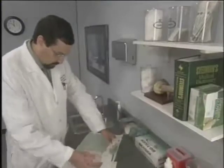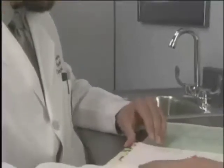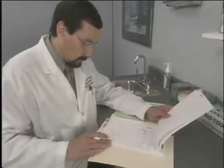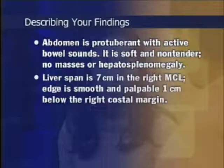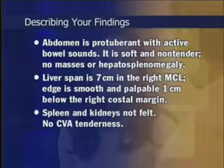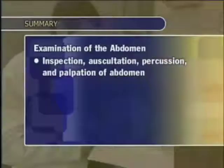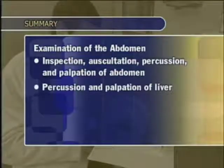A clear, well-organized clinical record employing language that is neutral, professional, and succinct is one of the most important adjuncts to patient care. For a healthy patient, your write-up might include: 'Abdomen is protuberant with active bowel sounds. It is soft and non-tender. No masses or hepatosplenomegaly. Liver span is 7 centimeters on the right midclavicular line; edge is smooth and palpable 1 centimeter below the right costal margin. Spleen and kidneys not felt. No costovertebral angle tenderness.' In summary, examination of the abdomen involves inspection, auscultation, percussion, and palpation of the abdomen, percussion and palpation of the liver, percussion and palpation of the spleen, and palpation of the right kidney and aorta.